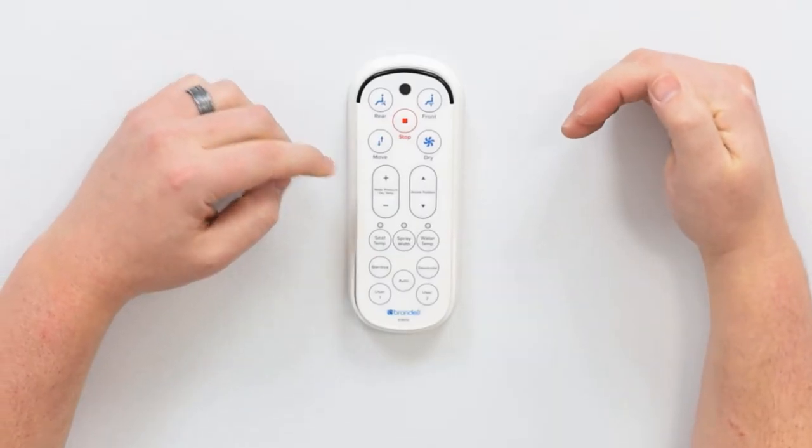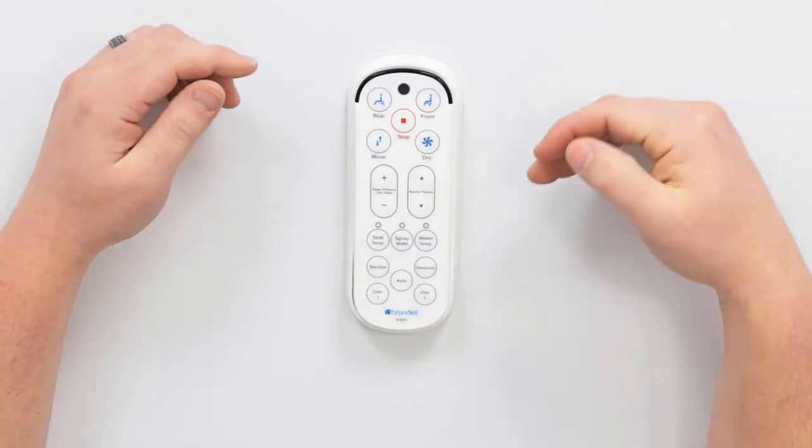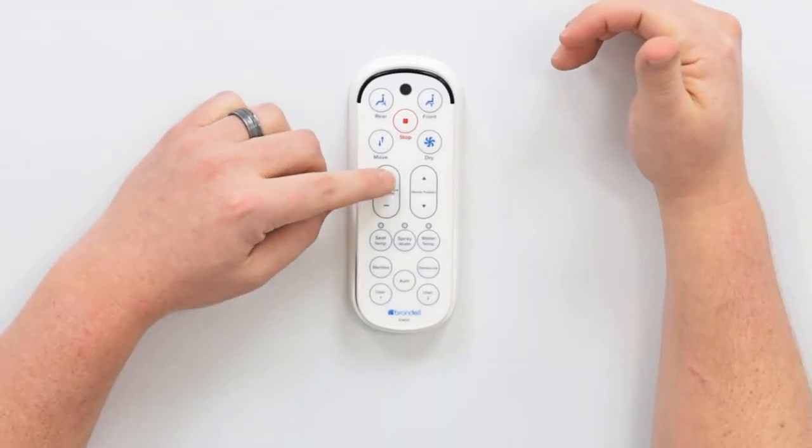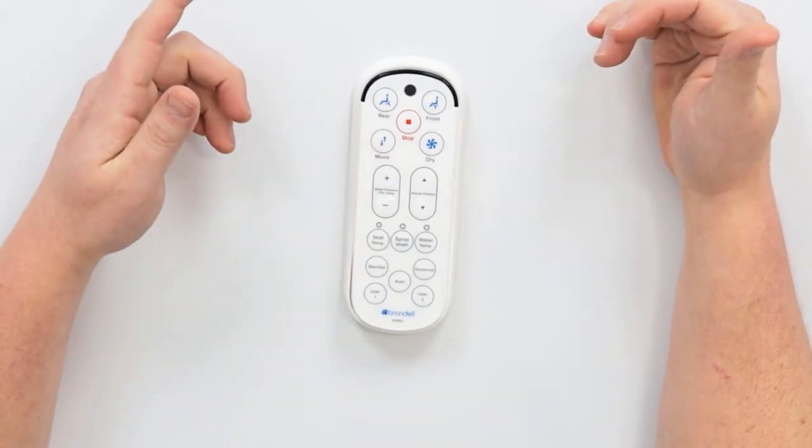If the wash is not running, these buttons won't do anything. So you would start the wash and then while the wash is running, adjust the pressure using the plus and minus buttons.